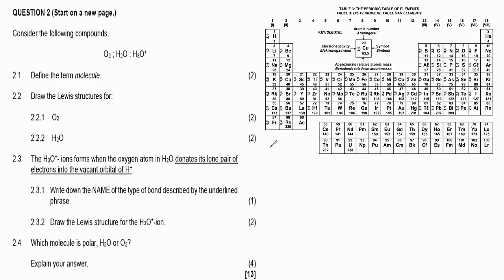For all the elements in group number one, they have one valence electron. For all the elements in group number two, they have two valence electrons. In group number 13, we have three valence electrons — you take 13 minus 10, skipping the transition metals. If we have group number 14, then it's 14 minus 10, leaving four valence electrons. Our oxygen is in group number 16, which means it has six valence electrons — that's 16 minus 10.